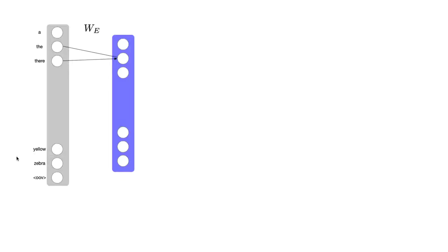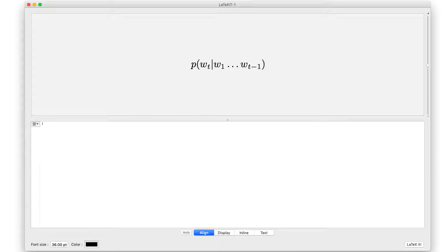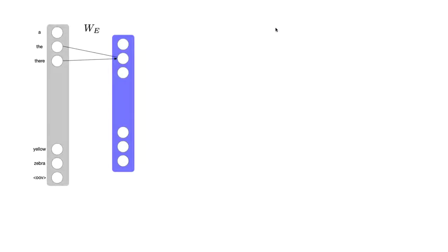We've picked a vocabulary size. The vertical bars denote size of. That gray vector conceptually has the dimensionality of the size of the vocabulary. So far nothing has changed from the n-gram language models that we've done before, the feed-forward models.